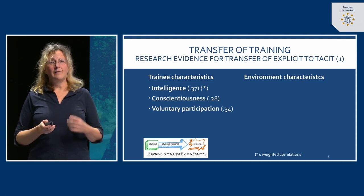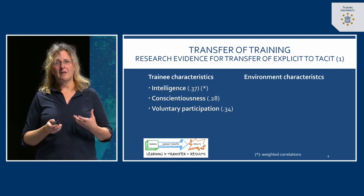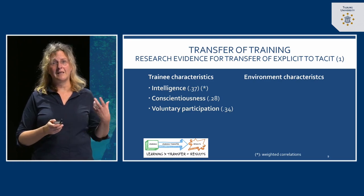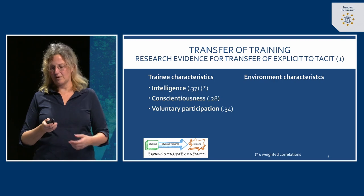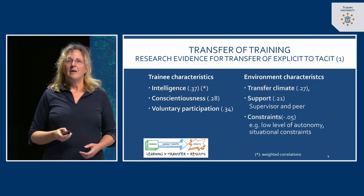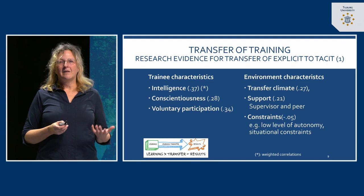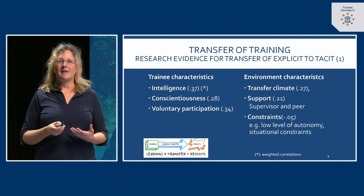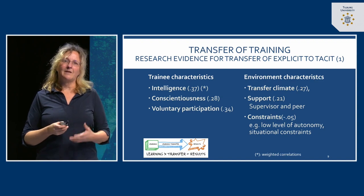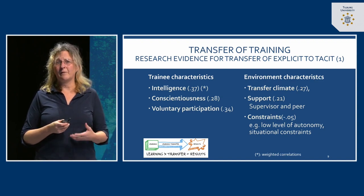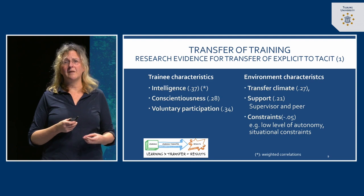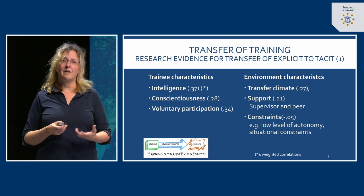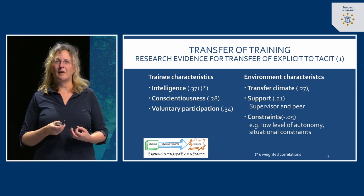Voluntary participation is something you can organize as an organization — make sure people know it's a worthwhile thing to do and stimulate voluntary participation. What you can also work on are environment characteristics: things you can organize in the transfer environment to make sure that the explicit knowledge from a course is used in practice. One example is training transfer climate — is it common that people talk about trainings and about what they learned? Management has a role here as a role model, and also to organize among employees to talk about what they learned and how they can apply it.